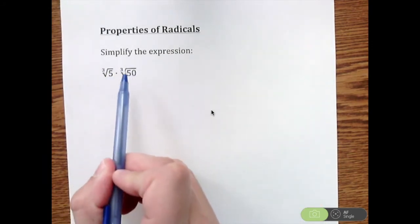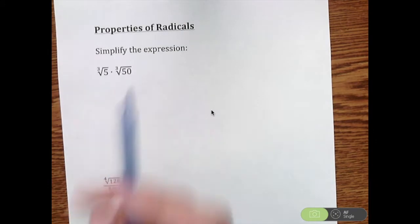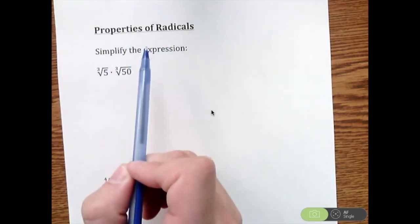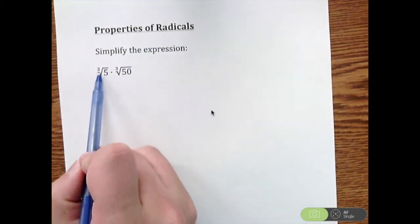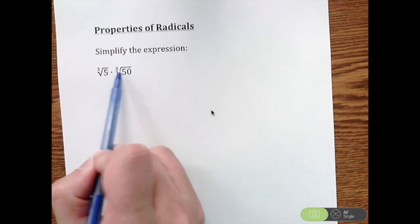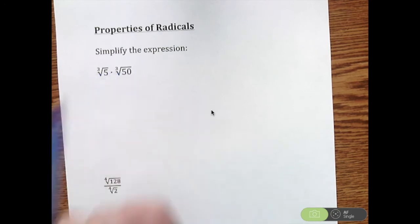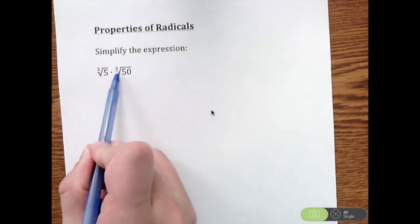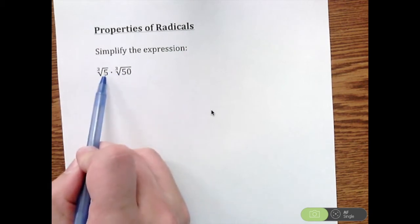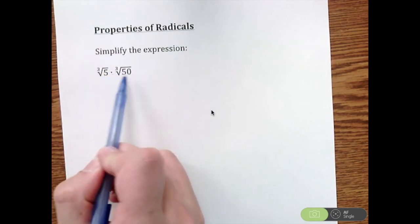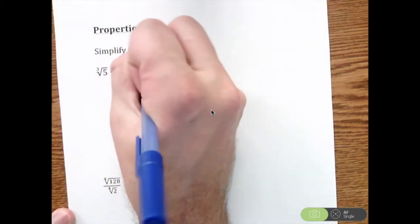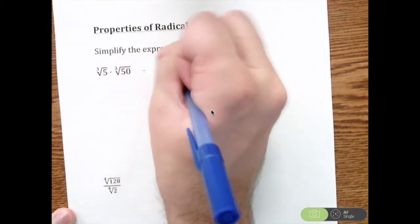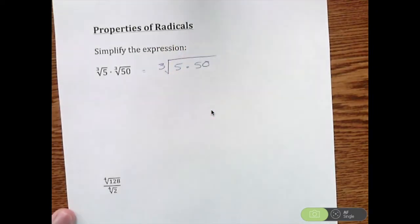For the first problem, we have the cube root of 5 times the cube root of 50. With properties of radicals, whenever your roots are the same—meaning the index is three for both—it allows us to multiply the insides together. So I can do 5 times 50, which equals 250, giving us the cube root of 250.